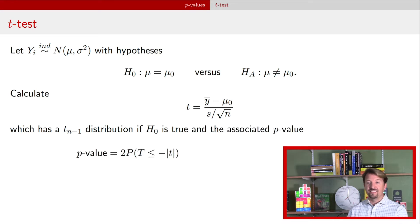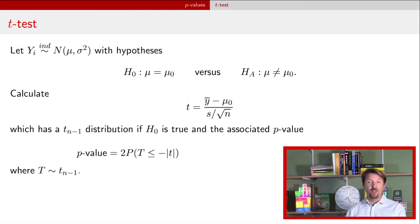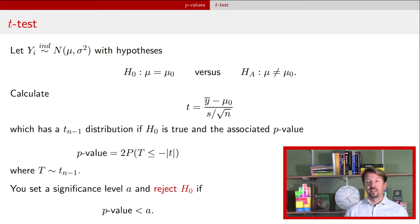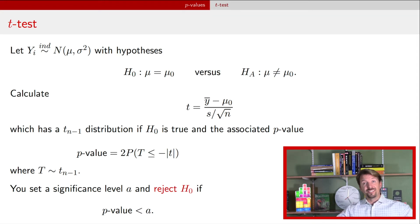We take that t-statistic and calculate a p-value using the standard formula. If we get a p-value that's small enough — below our predetermined significance level alpha — then we reject the null hypothesis. That's a standard t-test using a p-value to determine whether to reject the null or not.